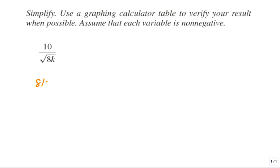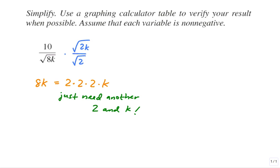The radicand in the denominator, 8k, can be factored as 2 times 2 times 2 times k. And you just need another factor of 2 and k to make it a perfect square. So that's what we'll multiply top and bottom by: radical 2k.